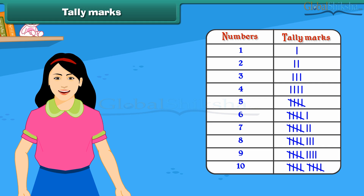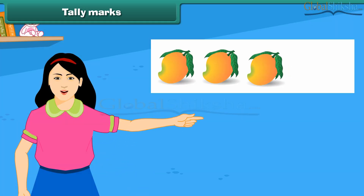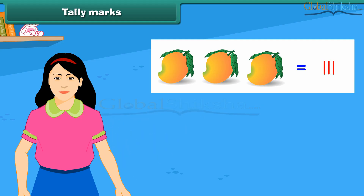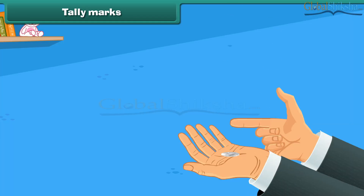For example, to count 3 mangoes, we make 3 tally marks. Let's do an activity to prepare a tally chart. Flip the coin and see what side of the coin appears. Is it heads or tails? Mark it in the table as shown.